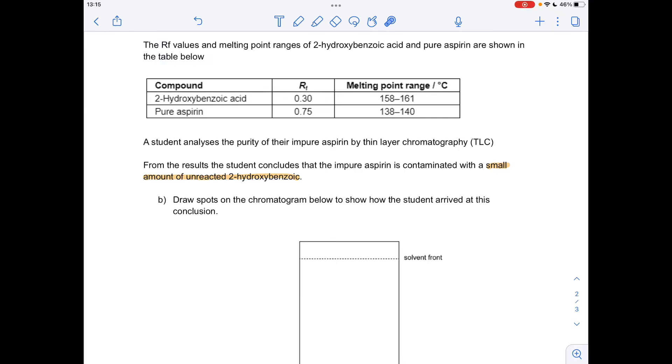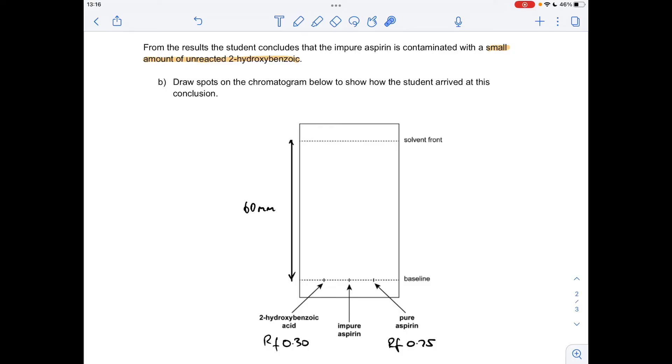For the first part of B, we've got to draw spots on the chromatogram to show how the student arrives at the conclusion that their aspirin is contaminated with a small amount of unreacted 2-hydroxybenzoic acid. The first thing we need to do is measure the distance between the baseline and the solvent front. I've measured the distance on my iPad screen and it's 60 millimeters.